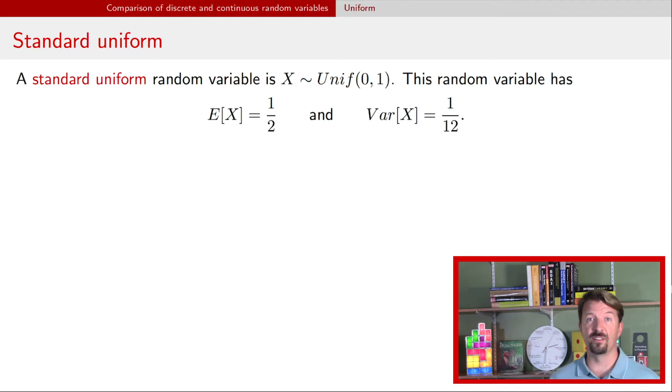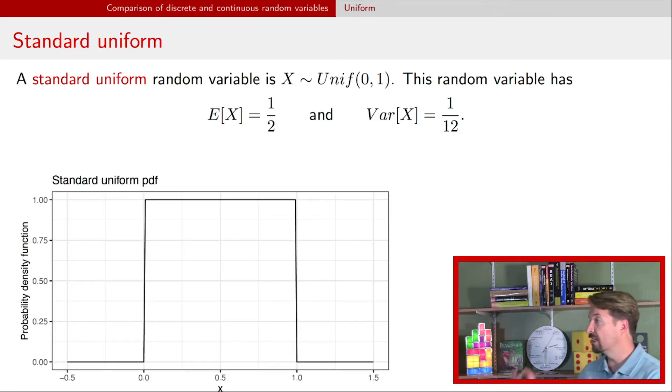The probability density function for a standard uniform looks like this. I don't know, can it get much more boring, right? It's just one between zero and one and it's zero everywhere else. Pretty dang boring step function.